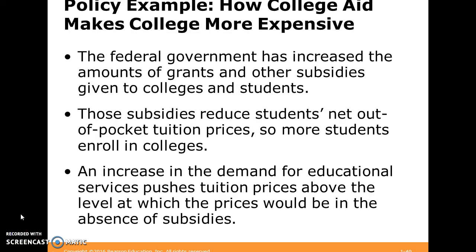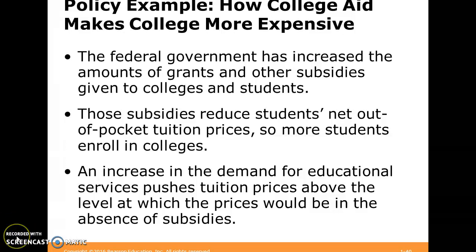Here's a real world example: how college aid can sometimes make college more expensive. The federal government has increased grants and other subsidies given to colleges and students. These subsidies reduce students' net out-of-pocket tuition prices, allowing more students to enroll. However, an increase in demand for educational services caused by these subsidies can push tuition prices above the level they were before — an unintended consequence.